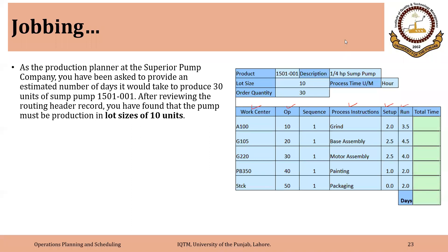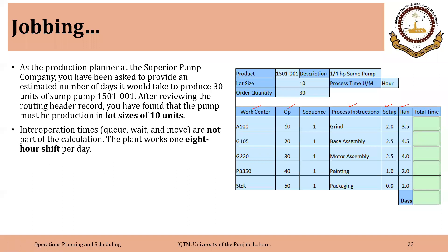As a production planner at the Superior Pump Company, you have been asked to provide an estimated number of days it would take to produce 30 units of pump 1501-001. After reviewing the routing header record, you have found that a pump must be produced in lot sizes of 10 units. The load size is 10 units. Inter-operation time — queue, wait, and move — are not part of the calculation.